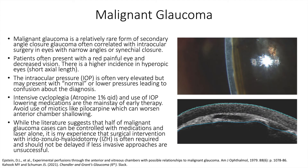Malignant glaucoma is a relatively rare form of secondary angle closure glaucoma, often correlating with intraocular surgery in eyes with narrow angles or synechial closure, although it can occur in open angles and even post non-invasive laser procedures like cyclophotocoagulation and laser iridotomy. Other terms used to describe the disease process include aqueous misdirection and ciliary block glaucoma.